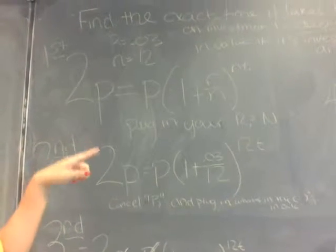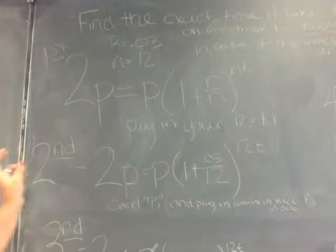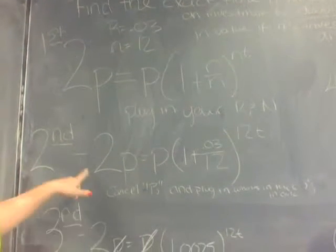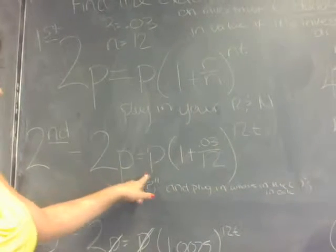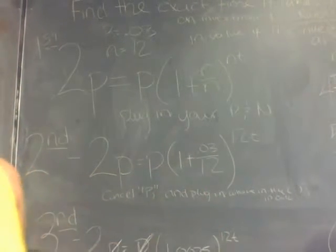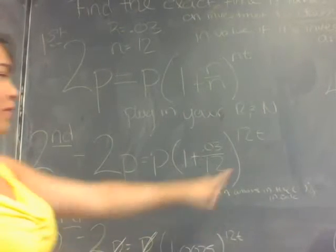Your R is your 3% which turns into 0.03 and monthly is 12. So it would be 2P equals P times the quantity 1 plus 0.03 over 12 to the exponent 12T.